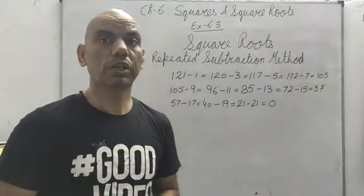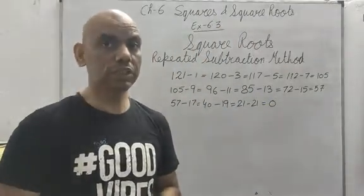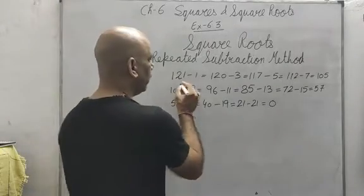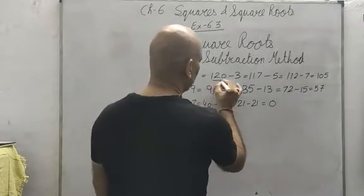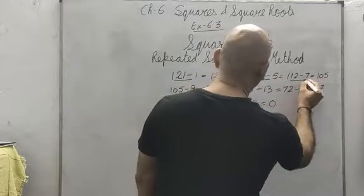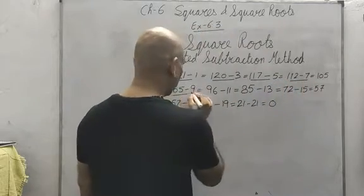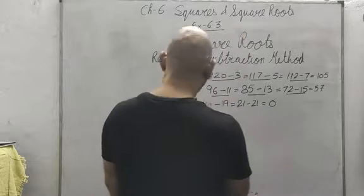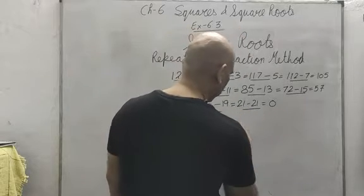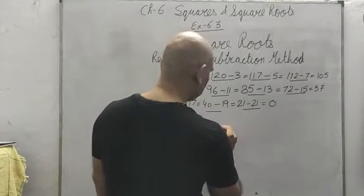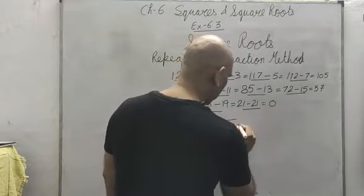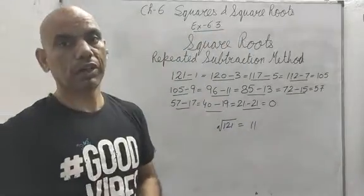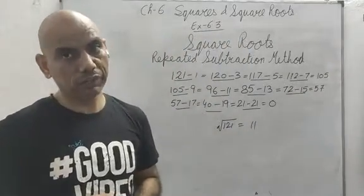You have to reach 0. Count how many times you have subtracted: 1, 2, 3, 4, 5, 6, 7, 8, 9, 10, 11. Hence, under root 121 is 11.